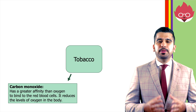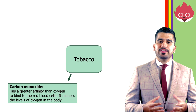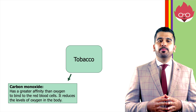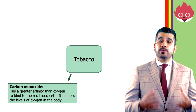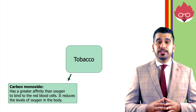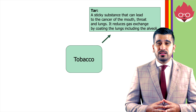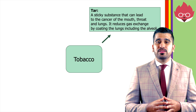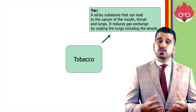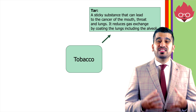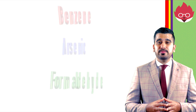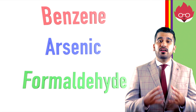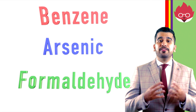Smoking tobacco produces carbon monoxide. This gas is dangerous as it has a greater affinity than oxygen to bind red blood cells. Therefore, it reduces the levels of oxygen in your body. Tobacco also contains tar, a sticky substance that can lead to cancer of the mouth, throat, and the lungs. It also reduces gas exchange by coating the lungs, including the alveoli. Finally, tobacco contains toxic chemicals such as benzene, arsenic, and formaldehyde.